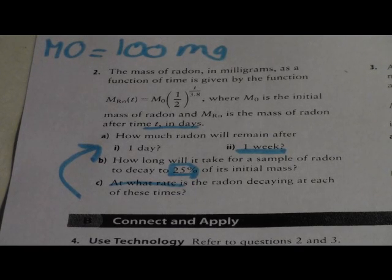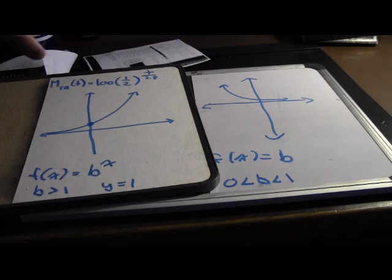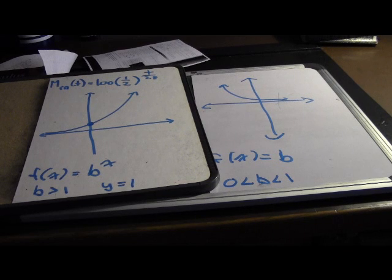Now I'm going to show you step by step exactly how to solve these questions. To use as a visual aid, I drew an exponential graph. On the left side you can see a basic exponential graph — as you can see, it's growing all the time when the b value, which is your base, is greater than 0.